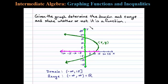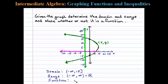Here we can see that we can find a vertical line that crosses the graph more than once, therefore it's not a function. In other words, the x value here — say 5 — has two possible y values, therefore the graph does not represent a function.